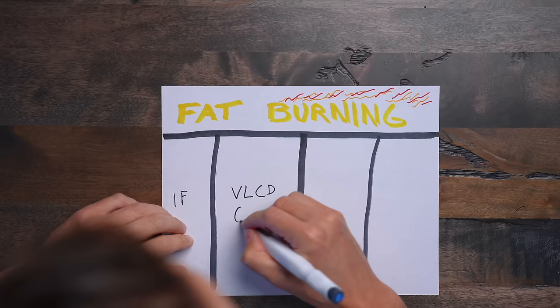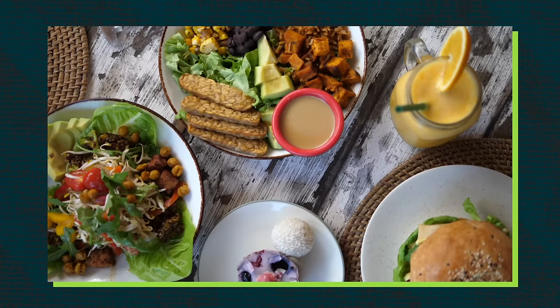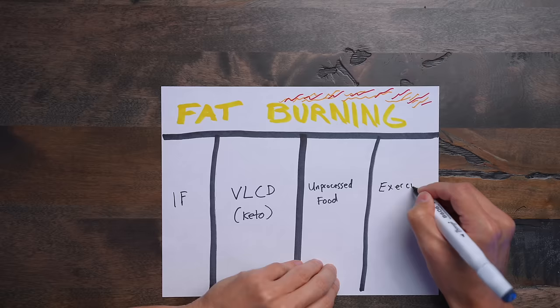And if you want to take things to an even higher fat burning level, keep the carbs lower and lower. So if you want to burn fat, one way to do it would be intermittent fasting. Another way to do it would be to go on a low carb or a very low carb diet—that's what the ketogenic diet is. A third way to do it is to eat unprocessed food, because unprocessed food naturally is low in sugar. And then the fourth way to shed fat is through exercise.